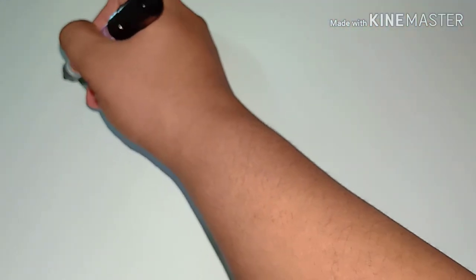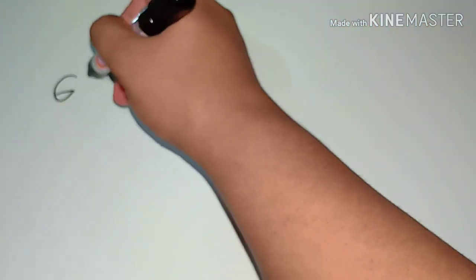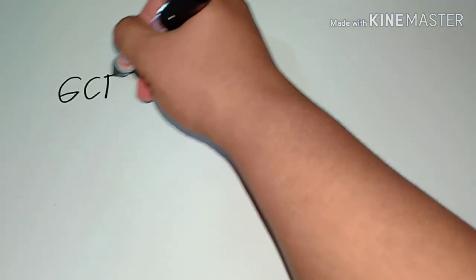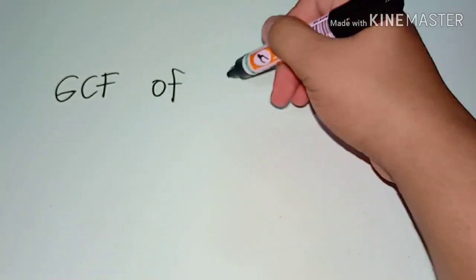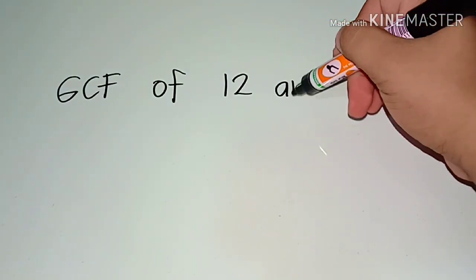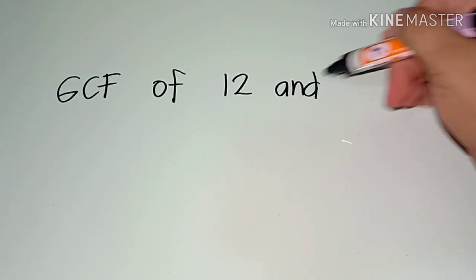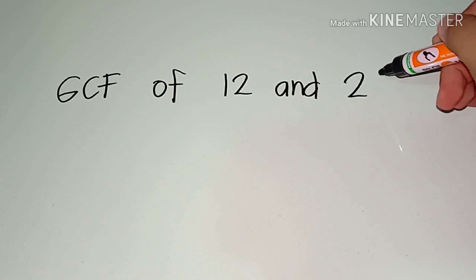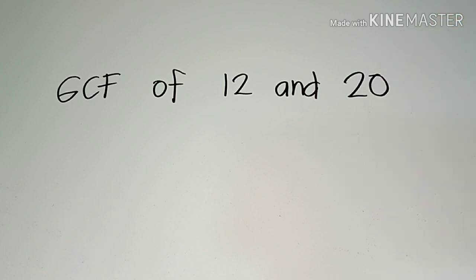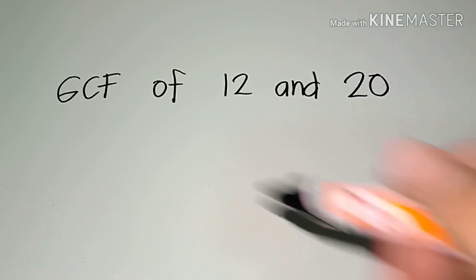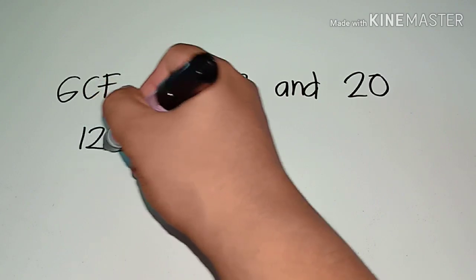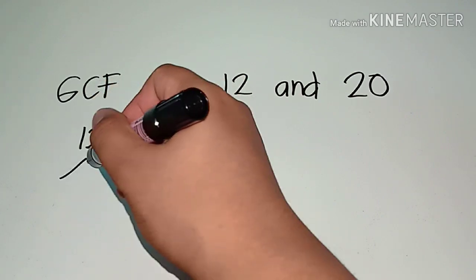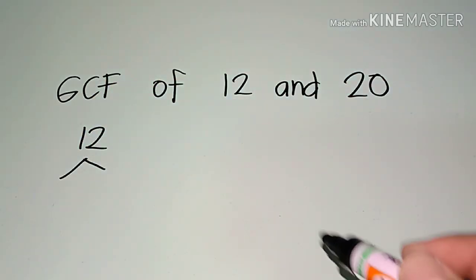Let's say we're going to look for the GCF of 12 and 20. So first, I'll be using prime factorization. So let's have 12 and we'll look for its prime factors.